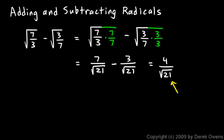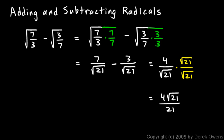Now I can take care of this radical in the denominator. I do that by multiplying by the square root of 21 over the square root of 21, and that gives me a final answer of 4 root 21 over 21. This is considered simplest form — there are no radicals in the denominator, no fractions under the radical, all perfect square factors have been taken out, and we can't simplify the square root of 21 any further. So that's our answer.